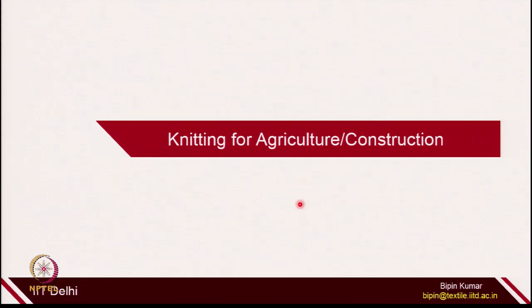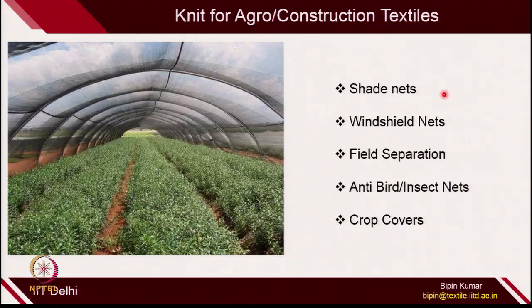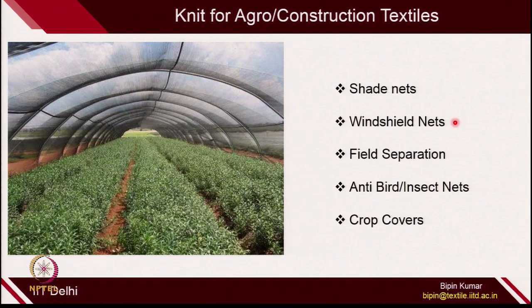Let's go to the third part: knitting for agriculture and construction. Agriculture and construction is one of the key areas where warp knit structures are mostly used. In knitting, shed nets for shedding some areas use a fabric made up of warp knit structure. Wind sill nets for separating fields and making partitions are also warp knit structures. Sometimes we use anti-bird nets, insect nets to protect the crops, crop covers, and mosquito nets — all highly porous nets that give some advantage through warp knit structures.